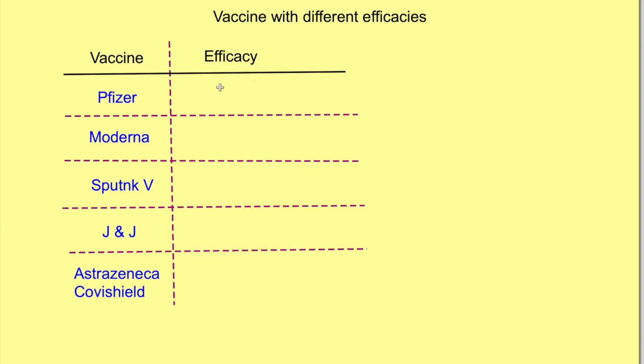Pfizer has an efficacy of 95 percent, Moderna an efficacy of 94 percent, Sputnik V of 90 percent, while Johnson and Johnson and AstraZeneca Covishield have an efficacy of 67 percent.